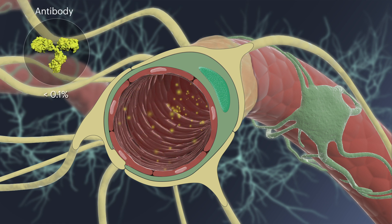For large molecules such as therapeutic antibodies, the amount crossing into the brain is often even lower than small molecule drugs, 0.1% or less. This limited transport of drugs into the brain reduces the efficacy of many brain-targeted therapies.